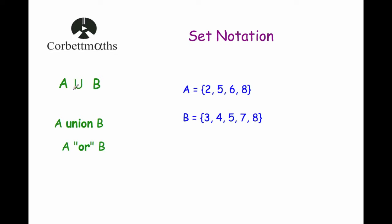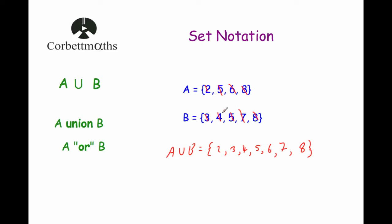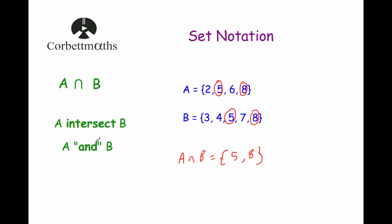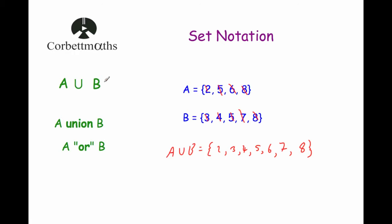Our next symbol is this U symbol and it stands for union, so we've got A union B. It means any members that are in set A or set B. With set A being {2, 5, 6, 8} and set B being {3, 4, 5, 7, 8}, it's any number that's in set A or set B or both. So A union B would be {2, 3, 4, 5, 6, 7, 8}. This union symbol stands for OR, and the intersect symbol stands for AND — so intersect means a member of both sets, and union means a member of either set or both.